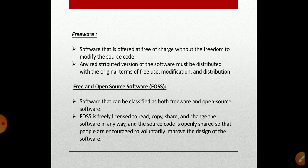FOSS is in contrast to proprietary software, where the software is under restrictive copyright licensing and the source code is hidden from the user. For free and open source software, the source code is available to the user, who is allowed to change, modify, or voluntarily improve the design. Examples include free and open source operating systems such as Linux and Android, which you are familiar with from mobile phones.